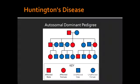What is Huntington's Disease? Huntington's Disease is an autosomal dominant trinucleotide repeat disorder.